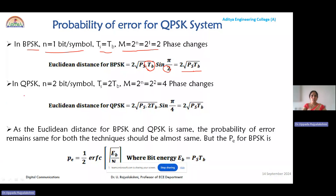For QPSK, two bits are grouped per symbol, so n = 2, symbol duration is Ts = 2Tb, and m = 4. The Euclidean distance is 2√(Ps · 2Tb) · sin(π/4). Since sin(π/4) = 1/√2, the √2 terms cancel and you get 2√(Ps · Tb). Observing both results, the Euclidean distances of BPSK and QPSK are the same.